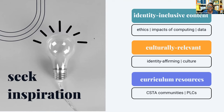The three areas I thought would be very helpful for seeking inspiration in the context of integration are: thinking about identity inclusive content — things focused on ethics, impacts of computing, data, cultural relevancy, things that are identity affirming for your students. Then thinking about what curriculum resources you have out there that you can tap into — there's no need to reinvent the wheel if it already exists. Biology and science, and math, probably integrate most nicely with computer science because there's so much one can do with data.